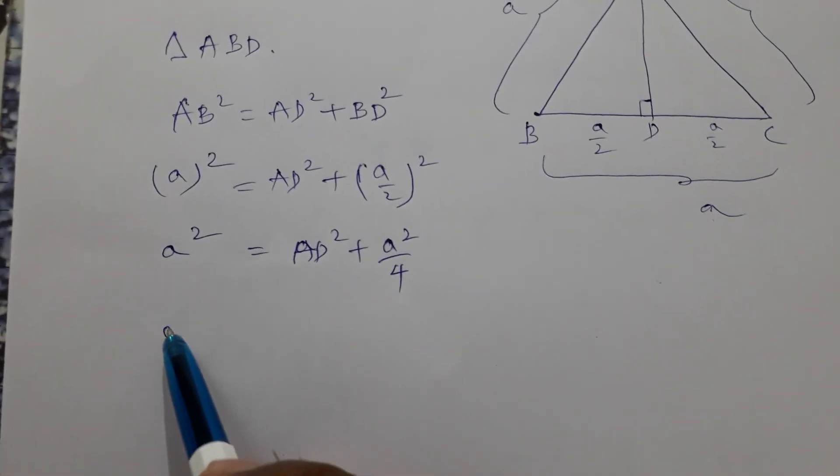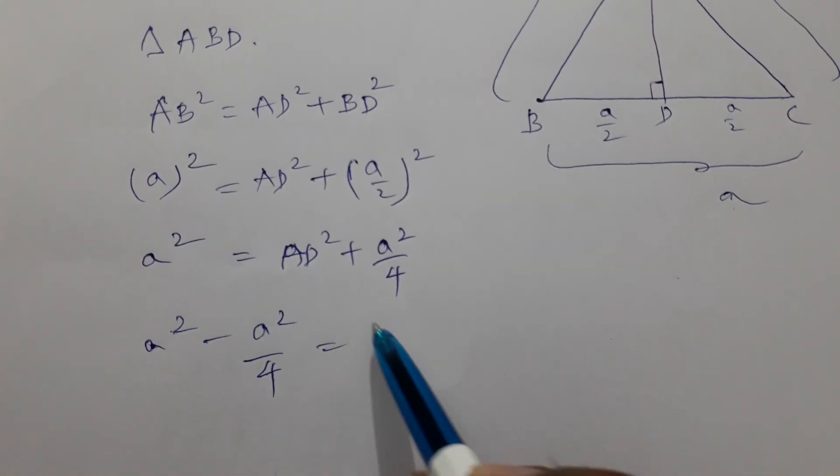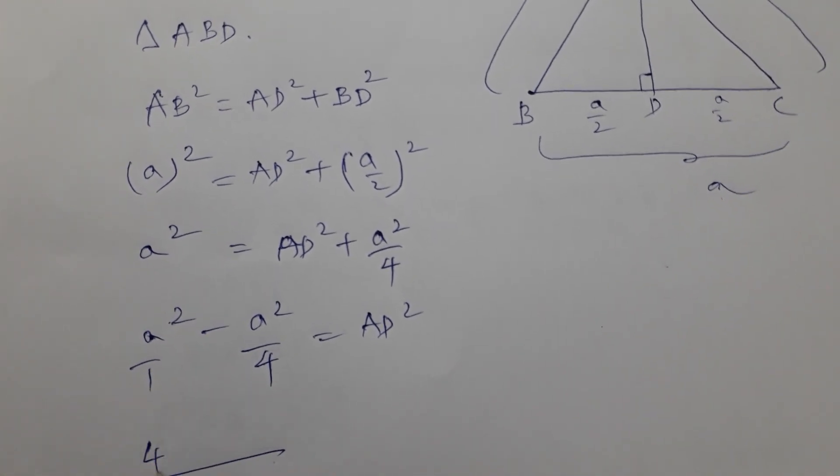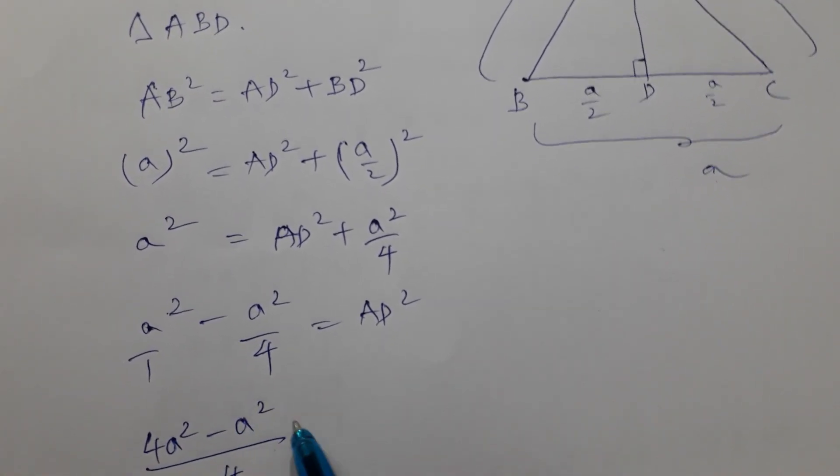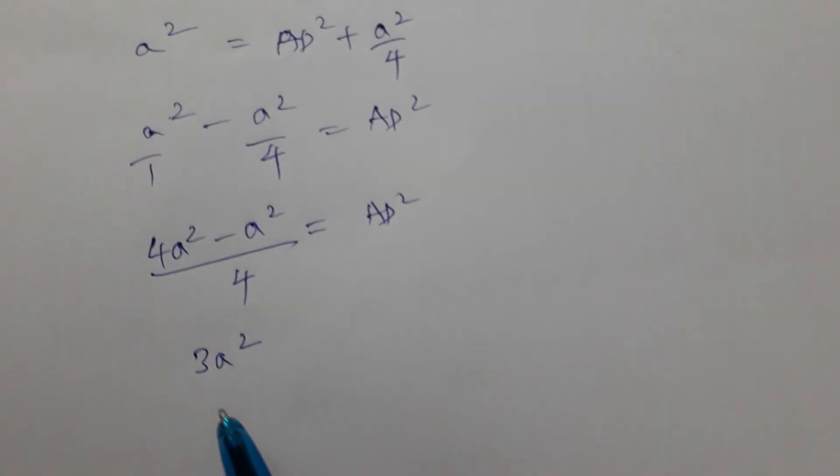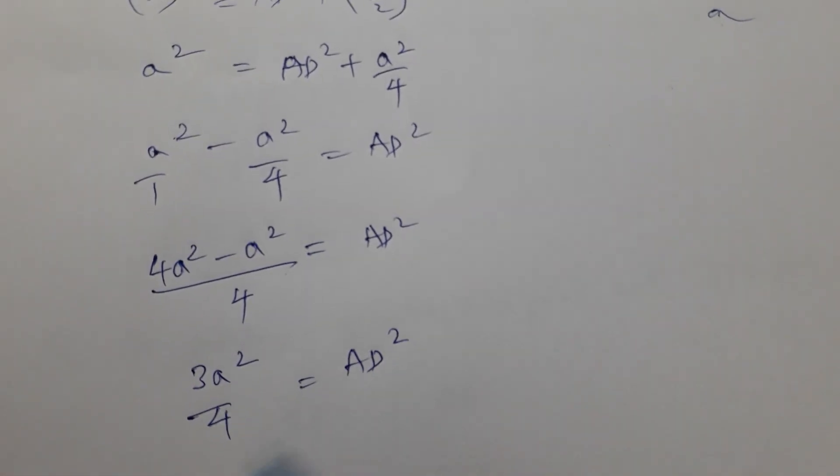Bring this A squared by 4 to LHS. A squared minus A squared by 4 equals AD squared. LCM is 4. 4A squared minus A squared equals AD squared. So 3A squared by 4 equals AD squared.